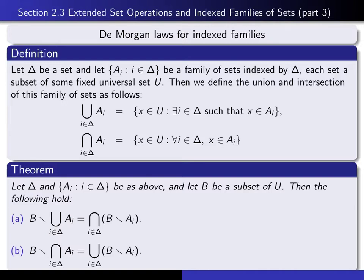So how would we get started? We give ourselves an x in the left-hand side and say what that means. It means that x is in B and x is not in the union. What does it mean to say x is not in the union? That means the negation is true — namely, for every i in the indexing set, x is not an element of a sub i. Well, if for every i, x is not in a sub i, and in addition x is in B, then for every i, x is in B minus a sub i. By definition, that's what it means to be in the intersection of all of the sets.